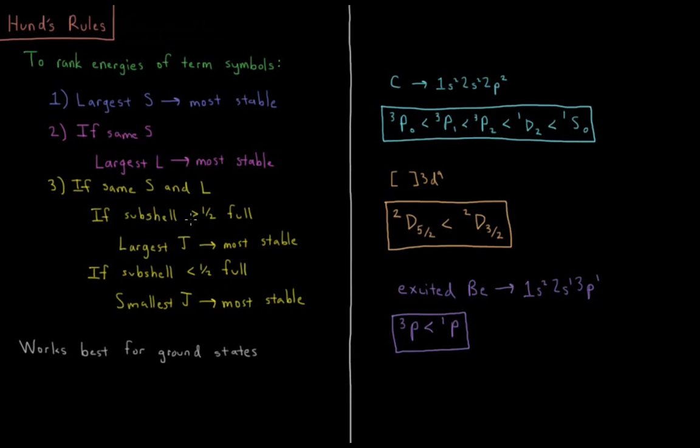So if our subshell is greater than half full, like it was for our 3D9 configuration, then we say that the largest J is the most stable. So for our 3D9, there are 10 spin orbitals in a D subshell, 9 is more than half, 5 would be half.